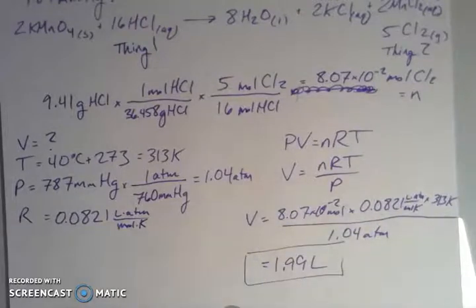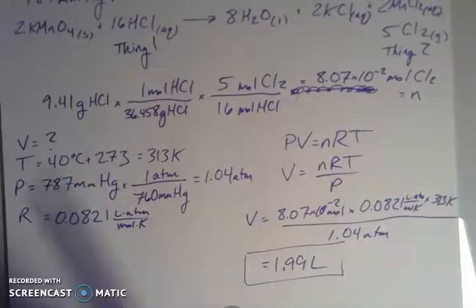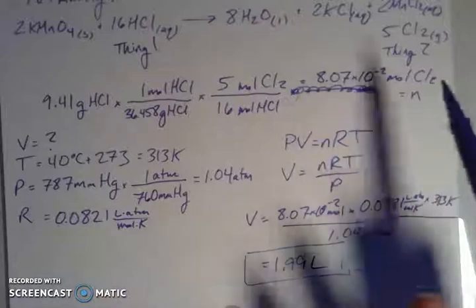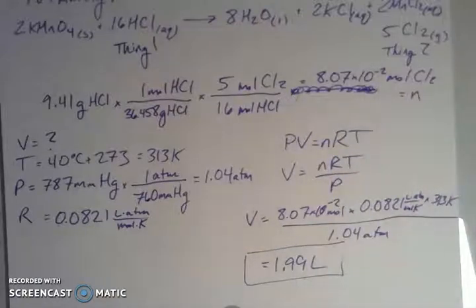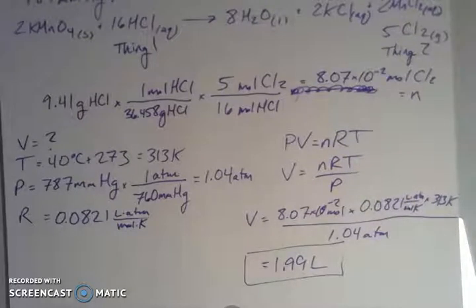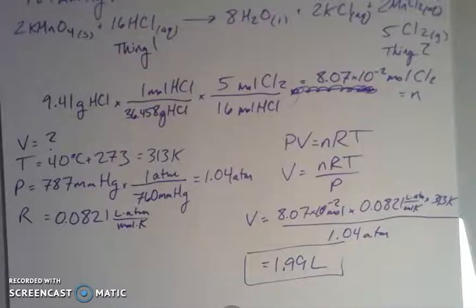That's another application of PV = nRT. Given a system with a balanced chemical equation, we can use stoichiometry to find n and then plug and chug if we know the conditions the system exists under. I hope this has helped to run through some problems, and I'll talk to you again soon.